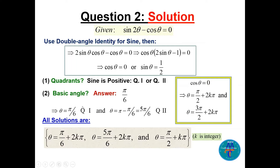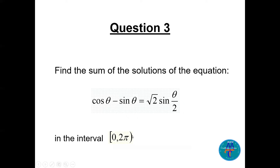For sine theta equal to one half, the reference angle is pi/6. Sine is positive in quadrants one and two, so theta equals pi/6 or 5pi/6. The complete general solution is: theta equals pi/6 plus 2k*pi, theta equals 5pi/6 plus 2k*pi, and theta equals pi/2 plus k*pi, where k is an integer.